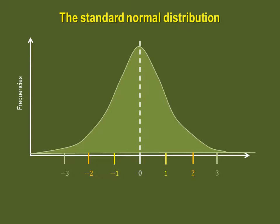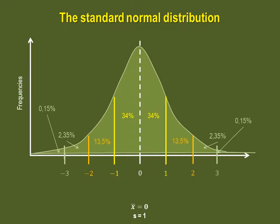Statisticians have devised the standard normal distribution, which has a mean of 0 and a standard deviation of 1. The percentages remain the same as all other normal distributions.